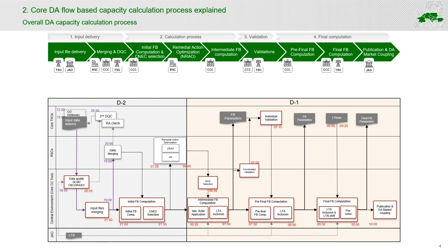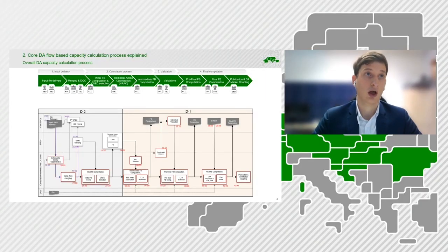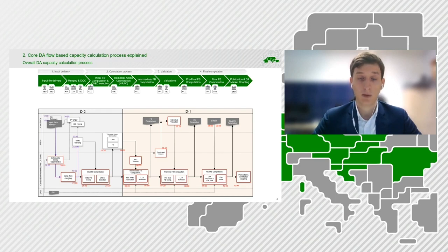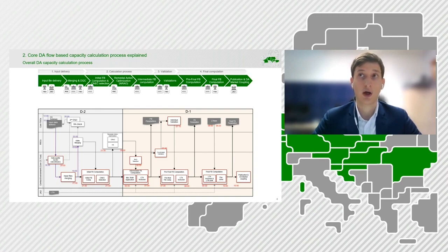We can see different rows in this scheme, allocated to different participants. Core TSOs are responsible for the tasks in the first row, RSCs for the second row. The whole third row is done in a coordinated manner by the coordinated capacity calculator. There is also a task by JAO.